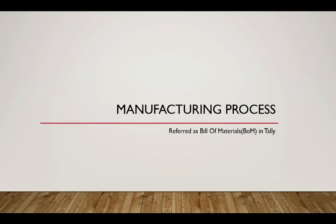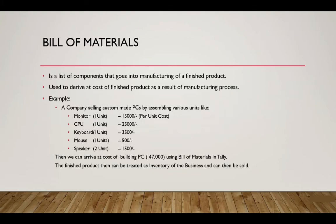In this section we will talk about a concept called Bill of Materials in Tally, which is related to the manufacturing process. A bill of material refers to a list which constitutes components of items that go into the manufacturing process to become a finished product. By using Bill of Materials in Tally, we can arrive at the cost of a finished product which is a result of the manufacturing process.